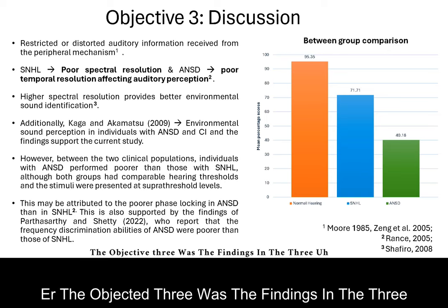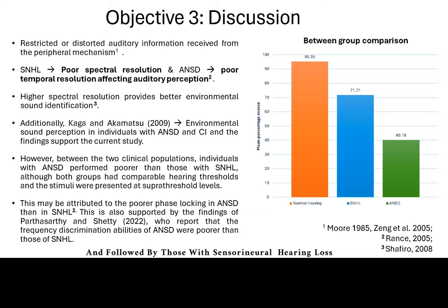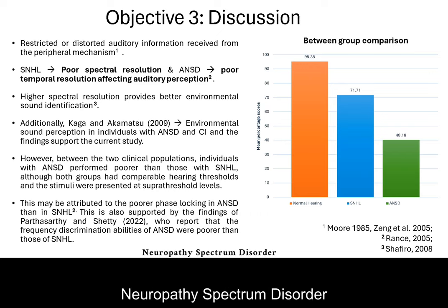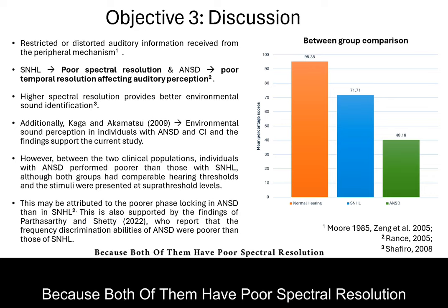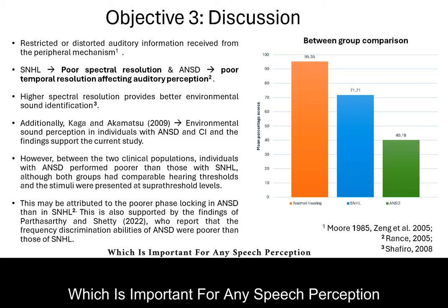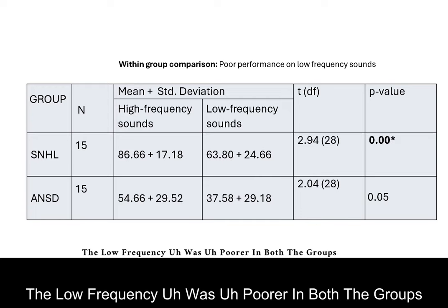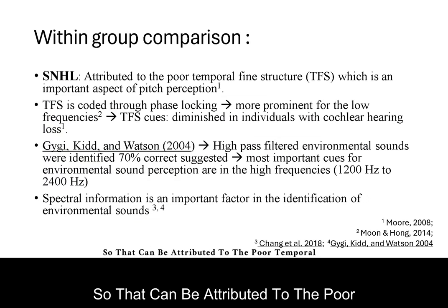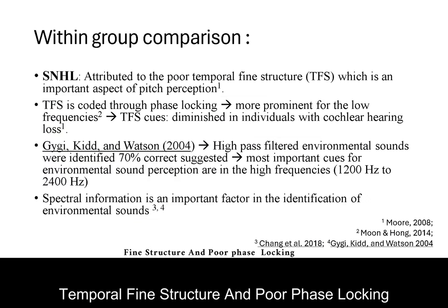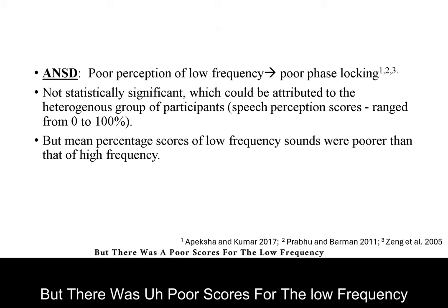For Objective 3, the findings across three groups showed that normal hearing had the best scores, followed by those with sensorineural hearing loss, and the least scores were in auditory neuropathy spectrum disorder. This can be attributed to poor or distorted auditory information in the clinical groups, as both have poor spectral resolution and temporal resolution. Within-group analysis showed that low-frequency performance was poorer in both clinical groups, and was statistically significantly different in the SNHL group, attributed to poor temporal fine structure and poor phase locking. In ANSD, the difference was not statistically significant but poor low-frequency scores were noted, also attributed to poor phase locking.